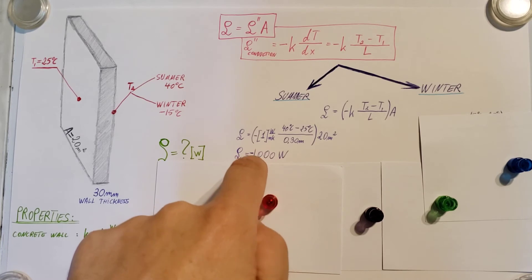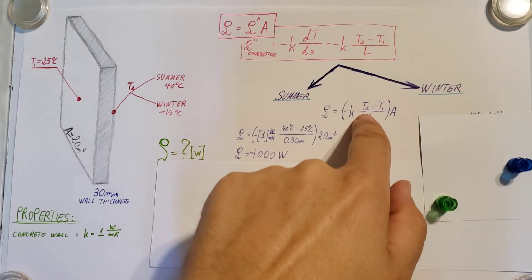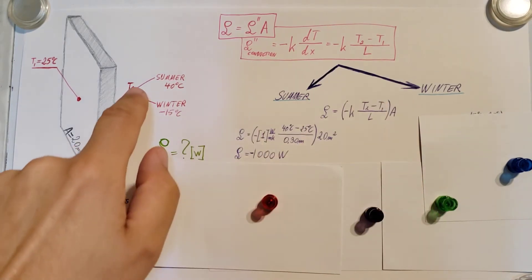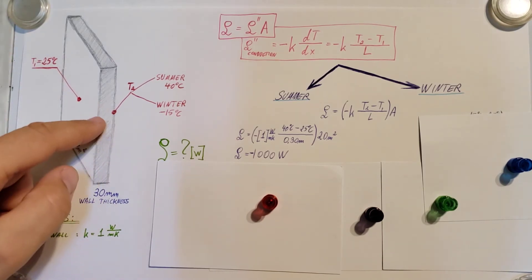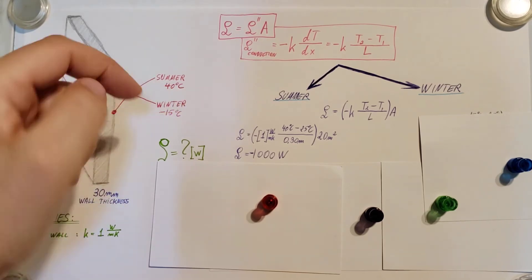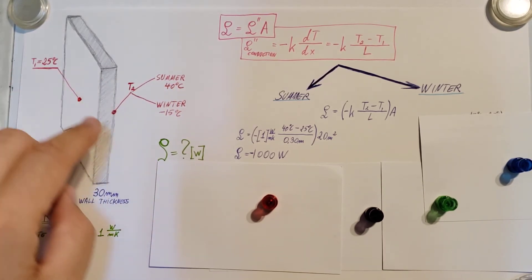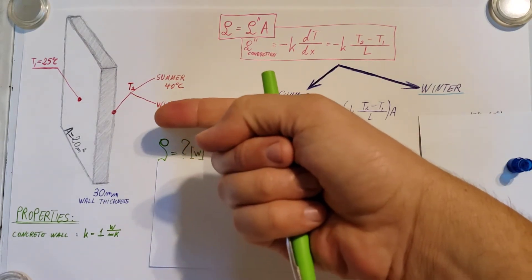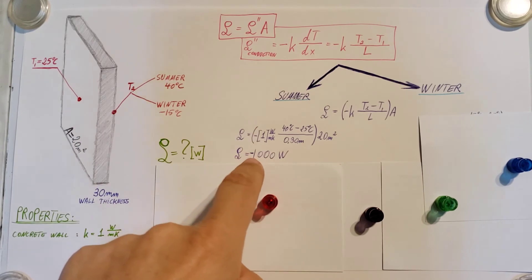Now, what does this negative mean? Well, we assumed that T2 and T1 to be in this order. So that means we assumed that the heat will be transferred from the inside or from this area going that way. But let's look at our temperature. Outside is 40, a lot bigger than what's inside. So clearly, heat will be transferred that way. So that's why we are seeing this negative.